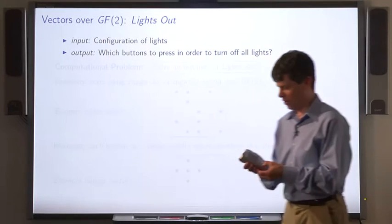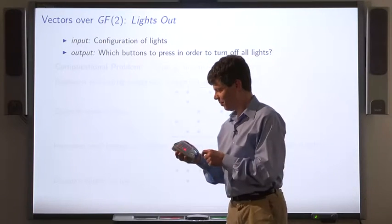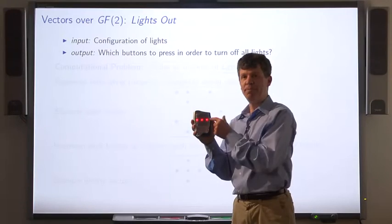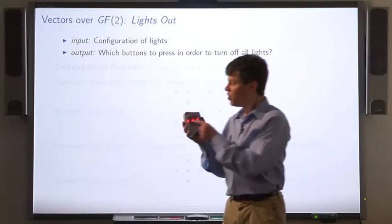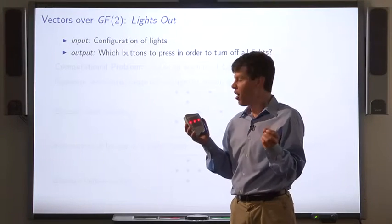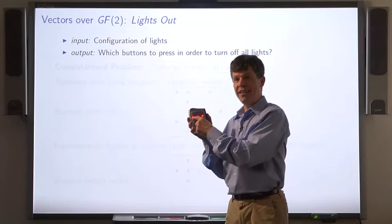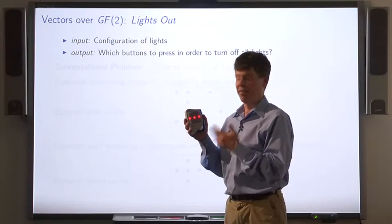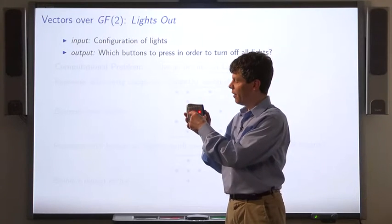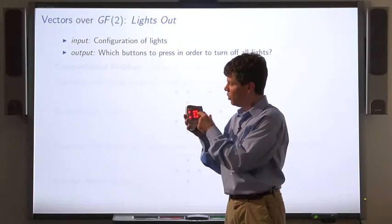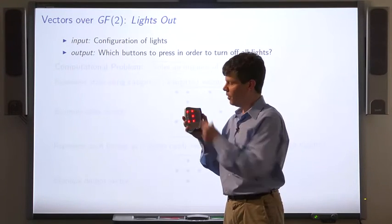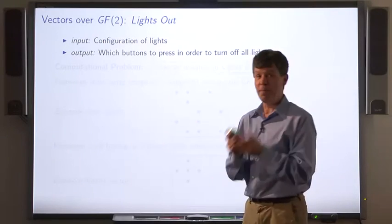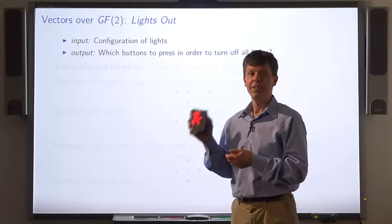Here's another application of GF2: the Lights Out puzzle. It's a five-by-five grid consisting of buttons that light up. When you push a button, it toggles the light — if the light is on, it turns it off; if the light's off, it turns it on. It also toggles the lights on the buttons immediately above and immediately to the left and right of the button you push. The goal is to push enough buttons to turn off all the lights. I'm obviously not very good at this, but I know linear algebra, so I'm going to look at how we can use linear algebra to figure out how to solve Lights Out.